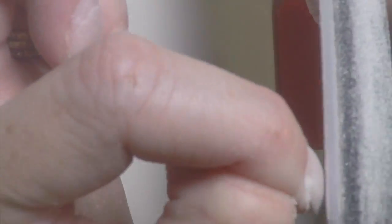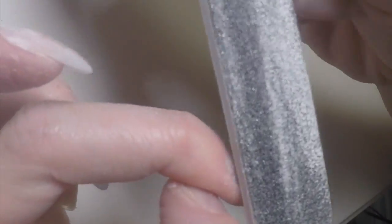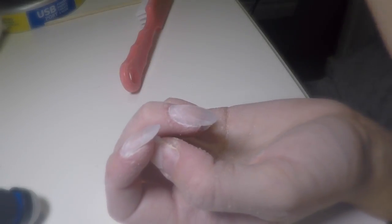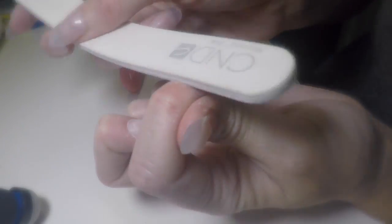Once you've done that, go ahead and blend it all into your natural nail plate again by going over it one more time with the coarse file. Do not over file your natural nail. I've been doing this a while, so I know a little bit about not going too deep into your natural nail.